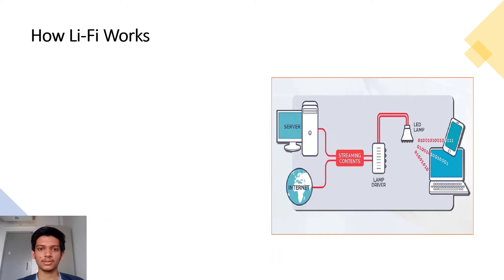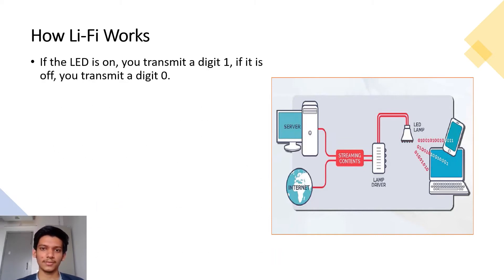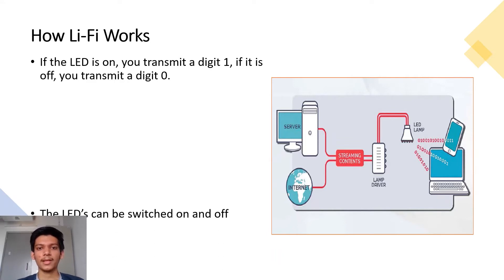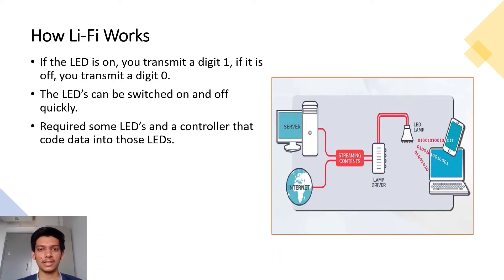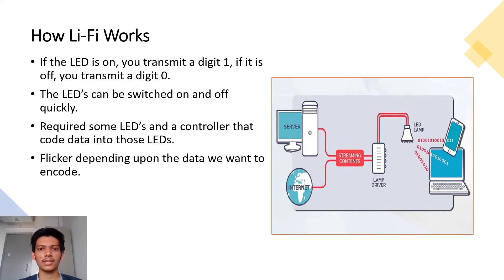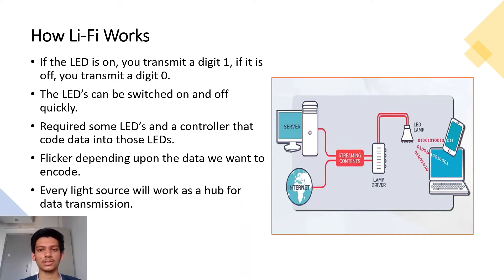The operational procedure of Li-Fi is very simple. If the LED is on, you transmit the digit 1; if it's off, you transmit the digit 0. LEDs can be switched on and off very quickly, which gives great opportunities for transmitting data. All that is required is some LEDs and a controller that can encode data. We vary the rate at which the LEDs flicker depending upon the data we want to encode, so every light source works as a hub for data transmission.